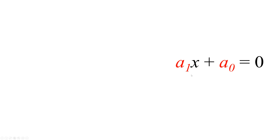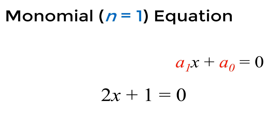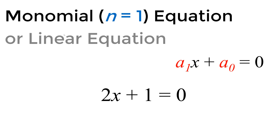If n equals 1, the equation we have is a1*x plus a_0 equal to zero. For example, we have 2x plus 1. In this case, a1 equals 2 and a_0 equals 1. Since we have exponent n equal to 1, we call it a nominal equation or simply a linear equation.